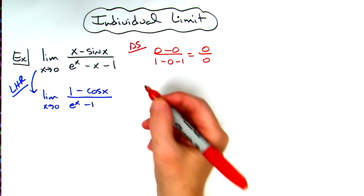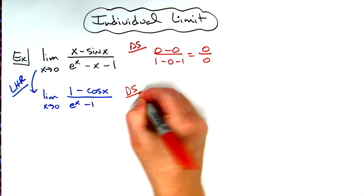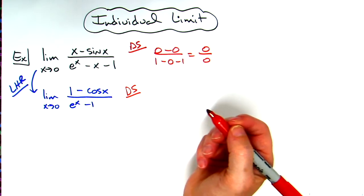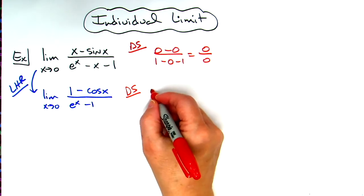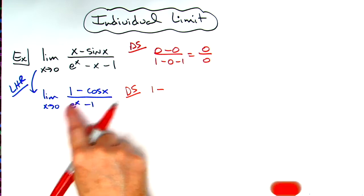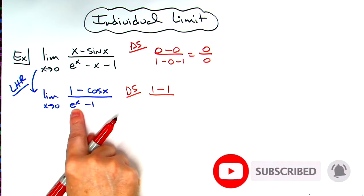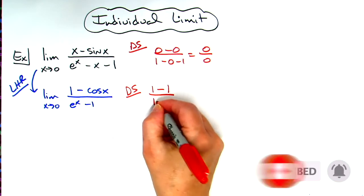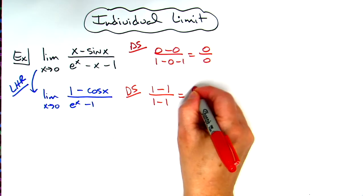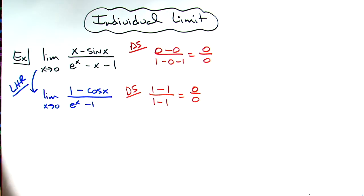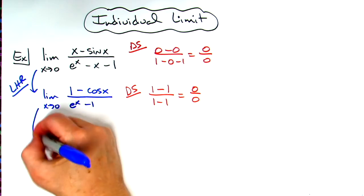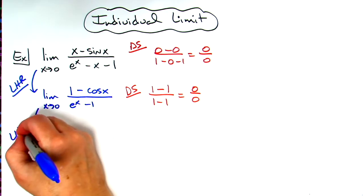Now I'll try another direct substitution to see if I get an answer or another indeterminate form. In my numerator I'll have one minus cosine of zero, which is one. Plugging in zero in the denominator, e to the zero is one minus one. That gives us another indeterminate form, so I can apply L'Hopital's rule one more time.